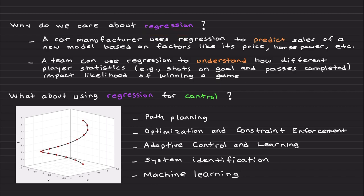First of all, I will give two examples. For example, a car manufacturer uses regression to predict sales of a new car model based on factors like, for example, price, horsepower, fuel, so on and so forth.